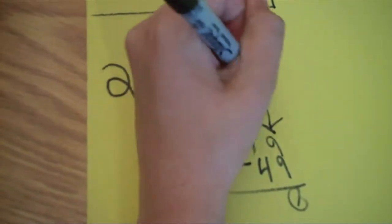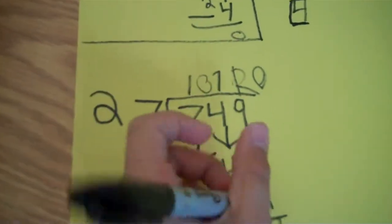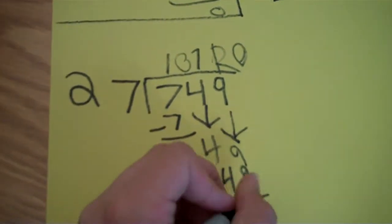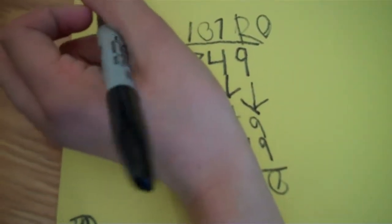So then you bring down the 4, you bring down the 9. And that's 49. So how many times can 7 go into 49? 7 times. So if you do 49 minus 49, it would be 0. So your answer would be 107 and the remainder is 0.